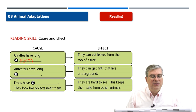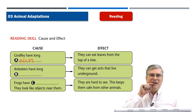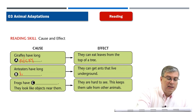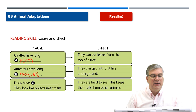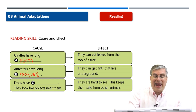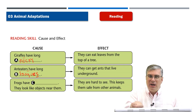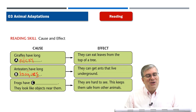Next, anteaters have long what? They have a really long tongue that they can stick out, so anteaters have long tongues — anteaters plural, tongues plural. What's the effect of that? They can eat ants that live underground — they can stick their tongue underground and get those ants. Delicious, maybe — not for us, but for anteaters, yes.